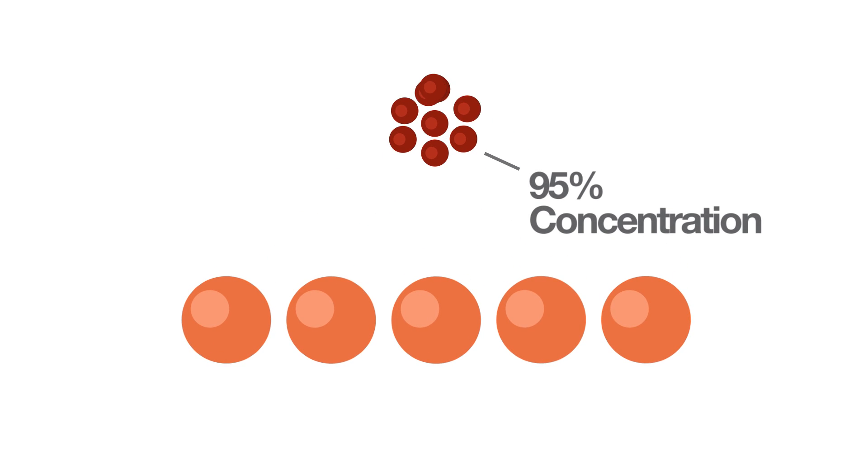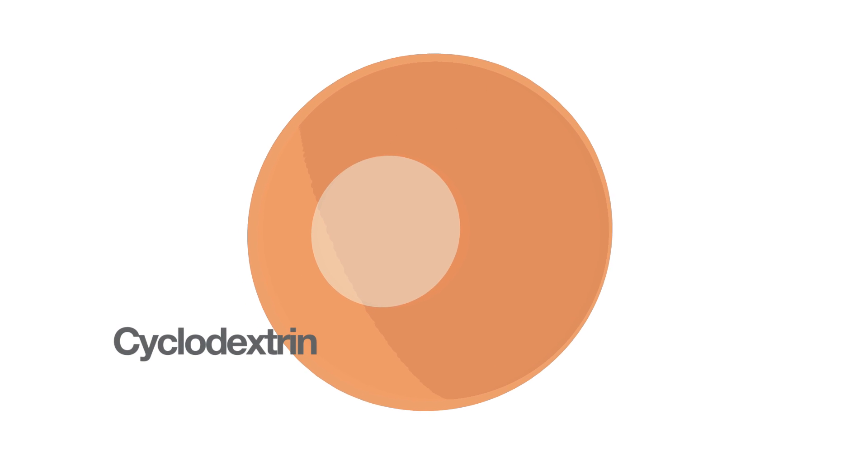Better You turmeric oral spray overcomes this by extracting the three active curcuminoids and then encapsulating them in a naturally derived starch known as cyclodextrin, making the curcuminoid molecules water soluble and preventing them from clumping together.